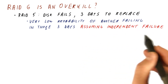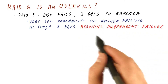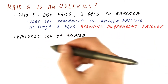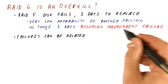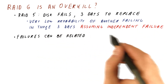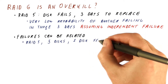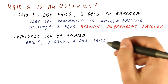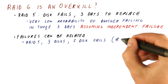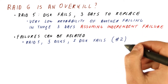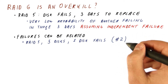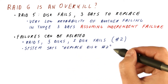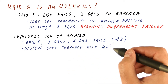But that assumes that the disk failures are independent. The failures can be related to each other, in which case this is not correct to assume. A typical scenario when this can happen: let's say that we have a RAID 5 with five disks, and one of the disks fails — disk number two in the array. The system reports that the disk has failed and continues functioning normally.